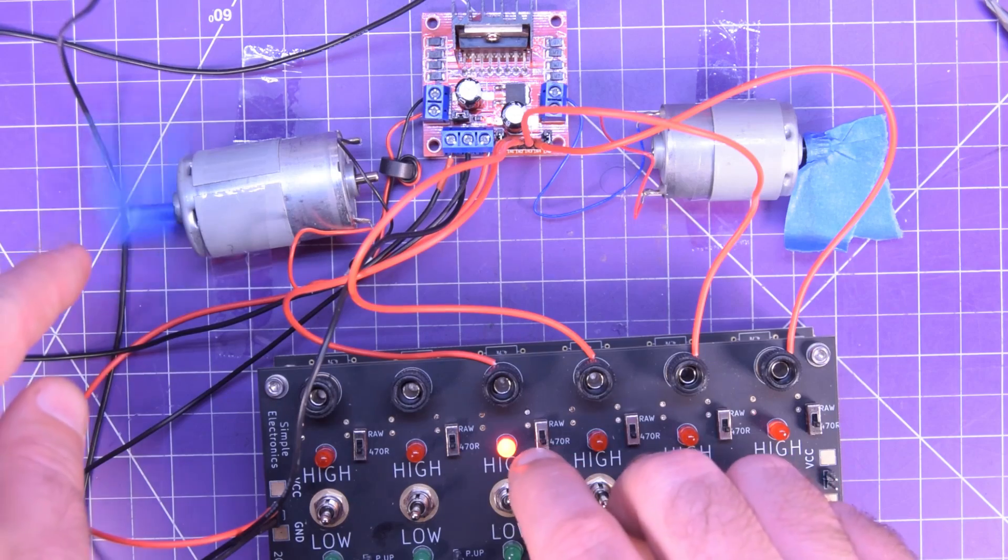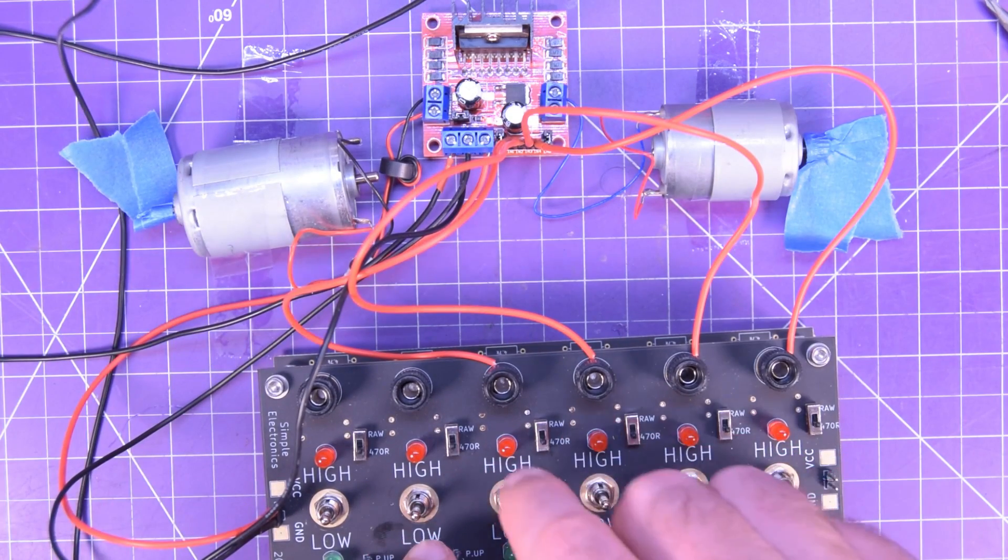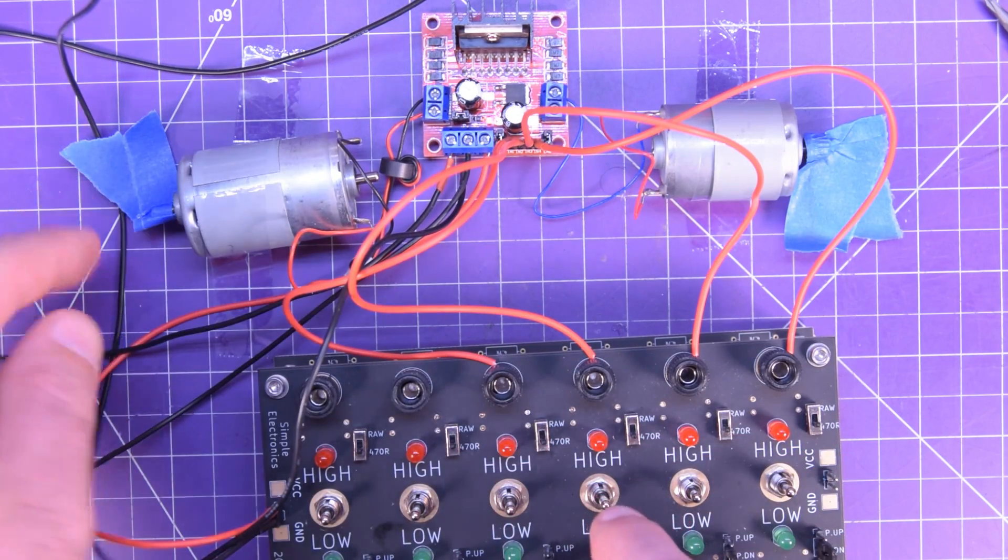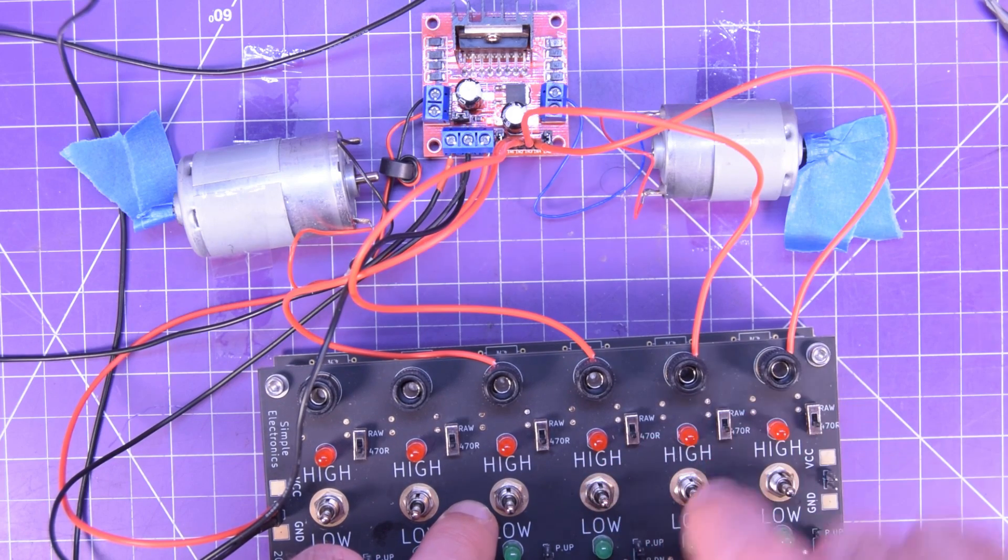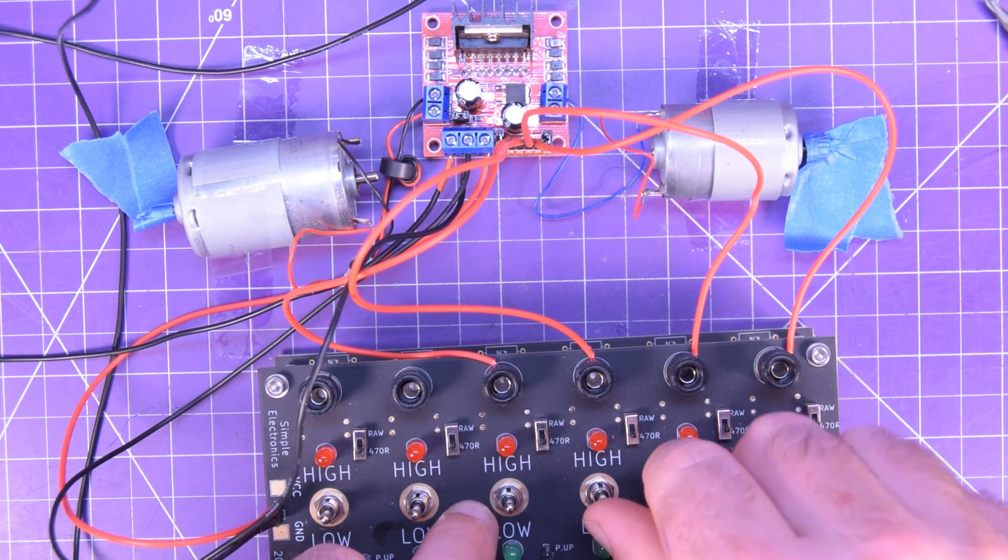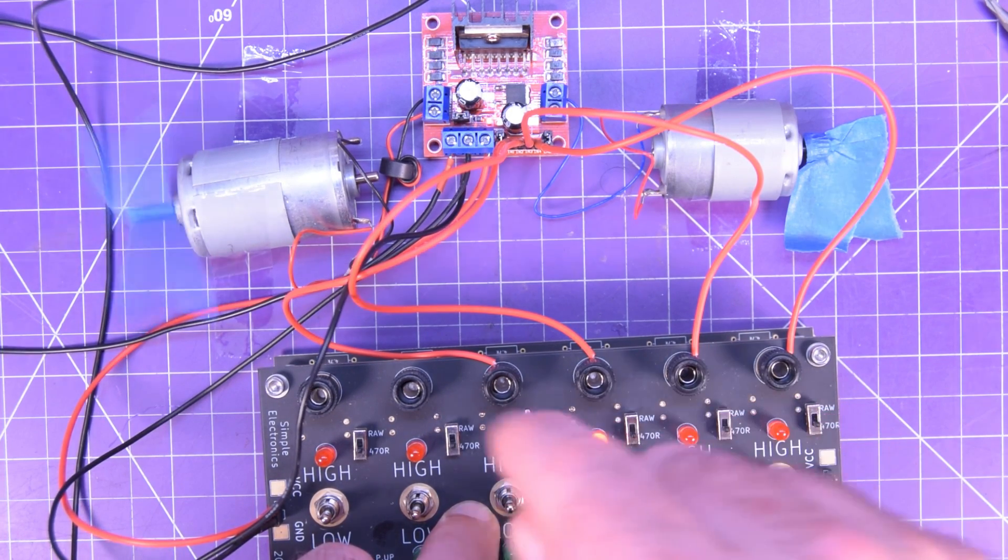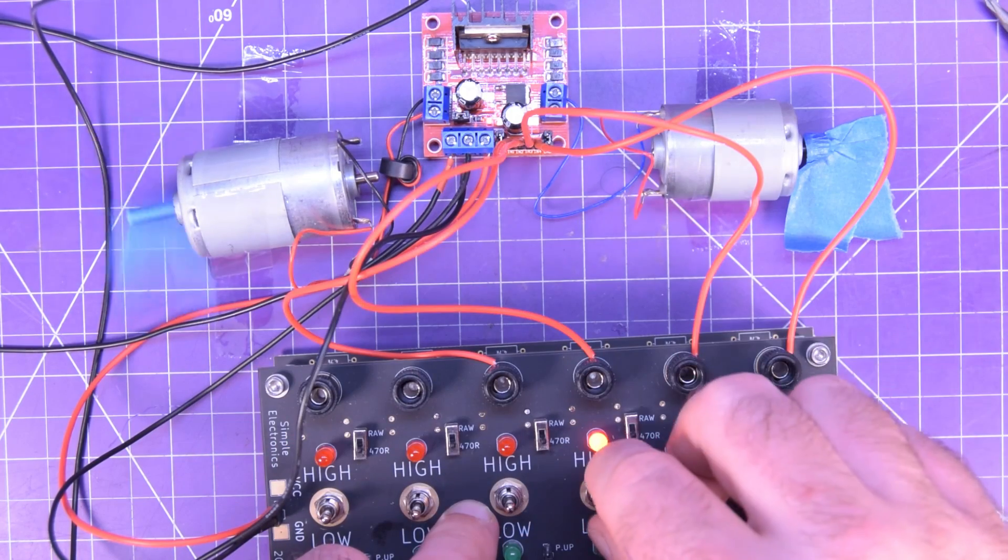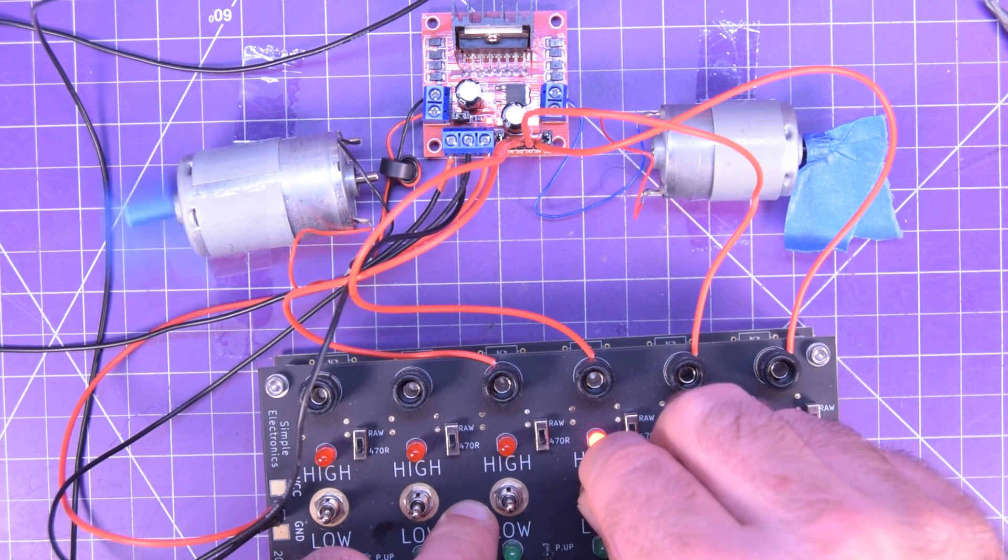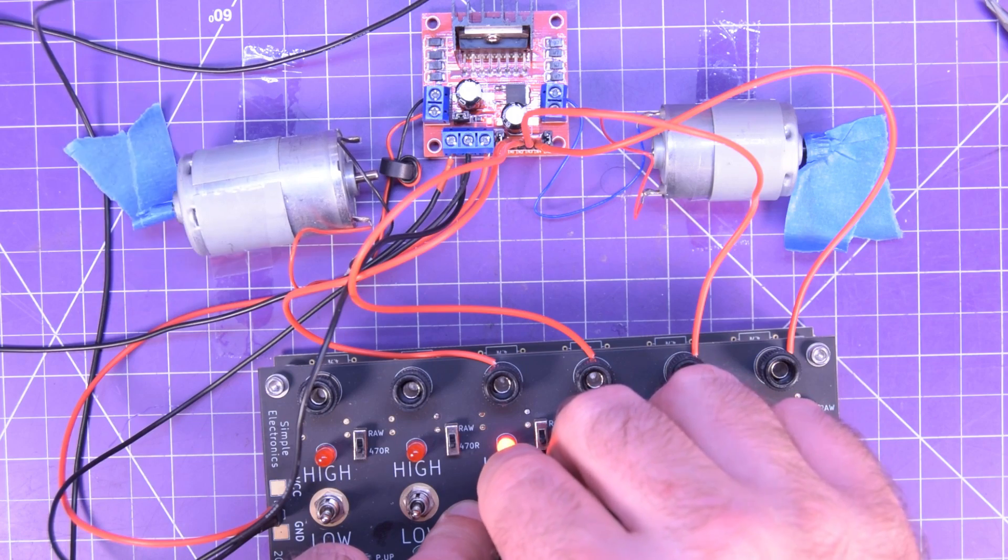There we go. So it's turning. If I flip it off, it turns off. So that was actually turning clockwise. Now if I turn the other one, the output 2 or input 2, it's turning but now it's turning counterclockwise. So one is one direction, the other one is the other.